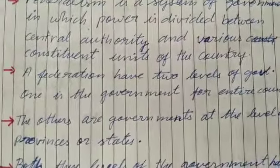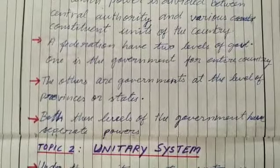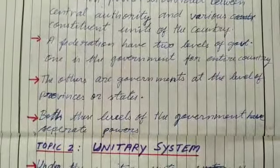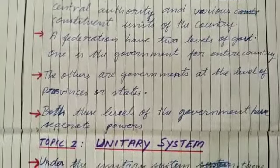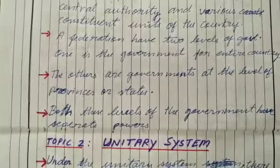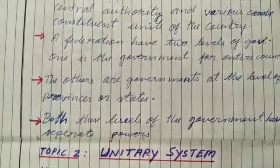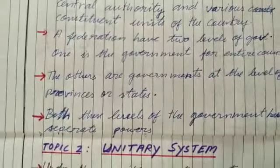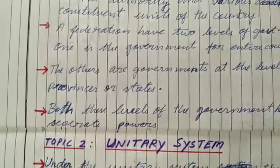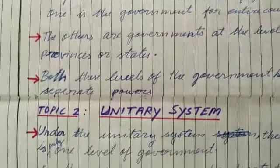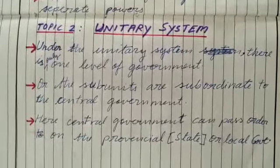Federations have two levels of government. One is the government for the entire country. The other are governments at the level of provinces or states. Both these levels of government have separate powers. Now, do we have only this one system of government in democracies? No. Some democratic nations also practice a unitary system of government or governance.